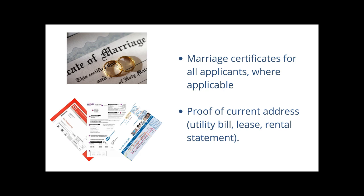Proof of current address is also required. This can be a utility bill, lease, or rental statement, but it has to be in your name on the account. If your name is not on any of these — say if you are living with your parents, for example — you could attach something in writing to say this. It would be of extra help if you could have this signed by someone such as a member of the Garda, your local TD, a disability service provider, or someone who holds a position of trust in your community, such as a priest or notary.